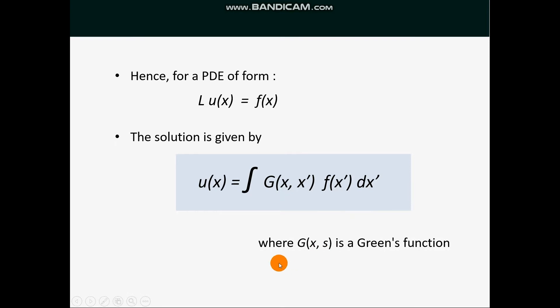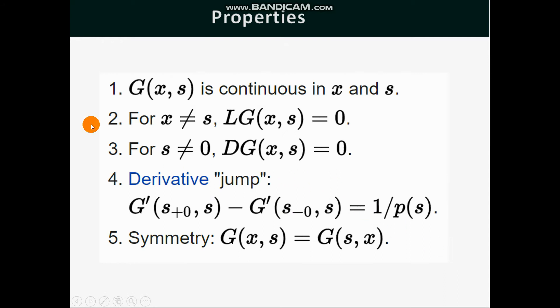Where G(x,s) is a Green's Function satisfying the following conditions: G(x) is continuous in x and s. For x not equal to s, L G(x,s) = 0. For s not equal to 0, D G(x,s) = 0. And the Green's Function is symmetric, that is G(x,s) = G(s,x).